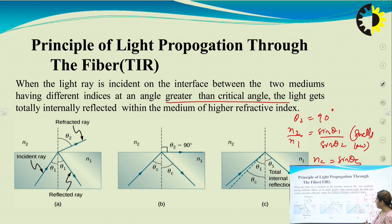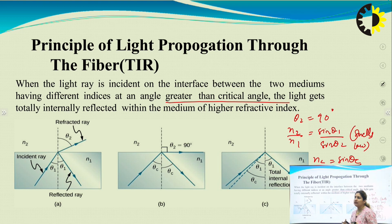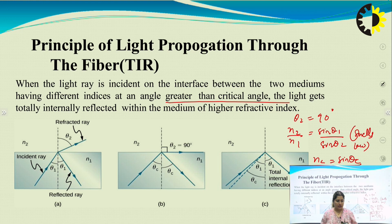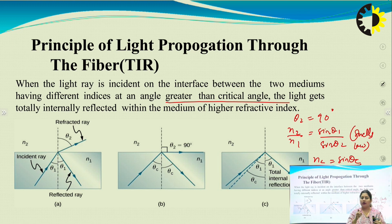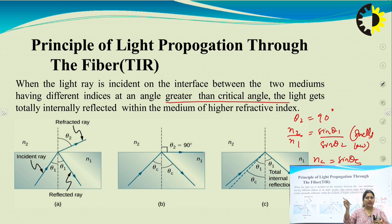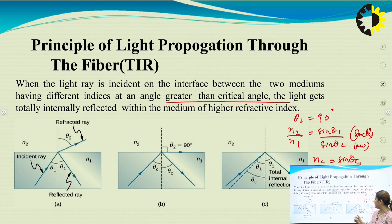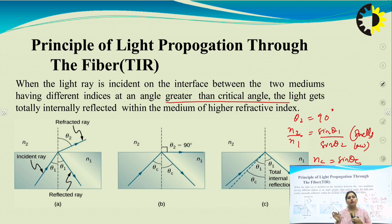As the angle exceeds the critical angle, the light gets totally internally reflected into the same originating medium — the core. These three stages show how light travels inside the fiber. Snell's law is applicable in the fiber because the fiber has a core of higher refractive index and an outer cladding of lower refractive index. If light hits the fiber at the critical angle, it becomes parallel to the interface; if the angle is greater than the critical angle, it reflects back into the core. This is how Snell's law and the TIR principle relate to optical fiber.